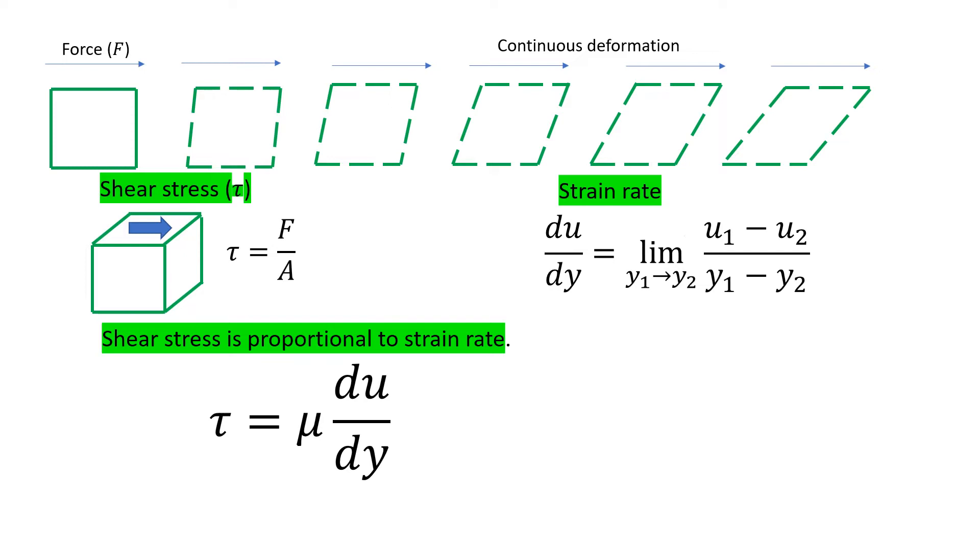By experimental observation we learned that there's a linear relationship between shear stress and strain rate. The coefficient for this linear relation is called viscosity. Viscosity μ is also called dynamic viscosity or absolute viscosity. You might see another term called kinematic viscosity, which is defined as μ (dynamic viscosity) divided by ρ (density of the fluid).